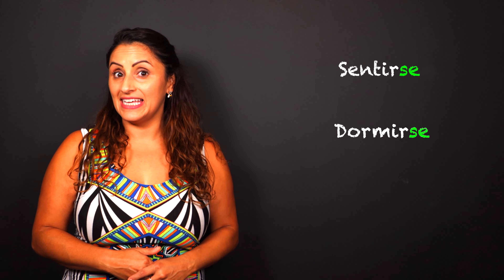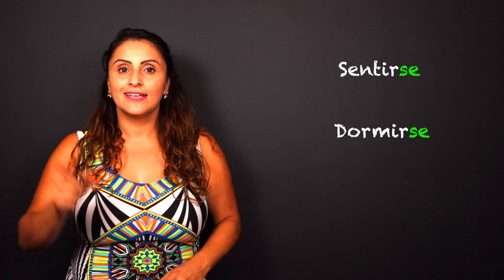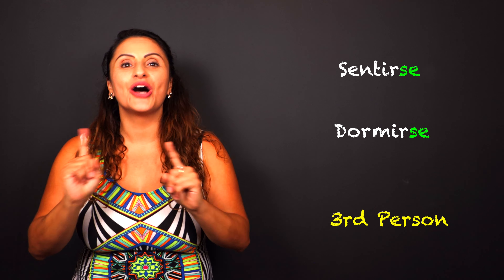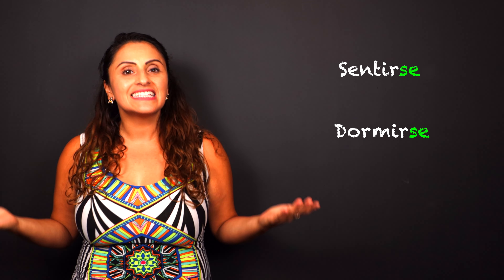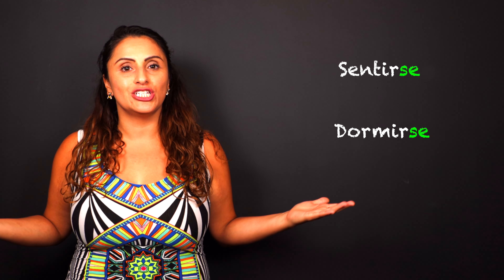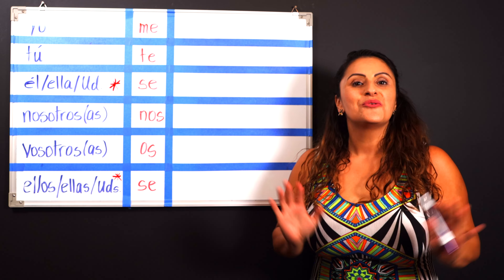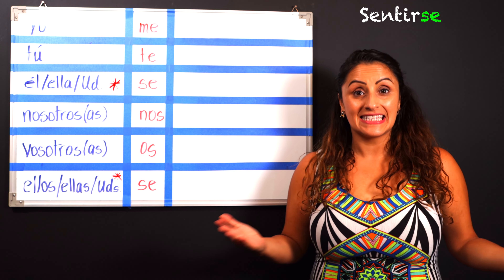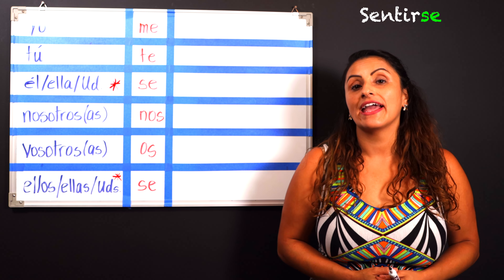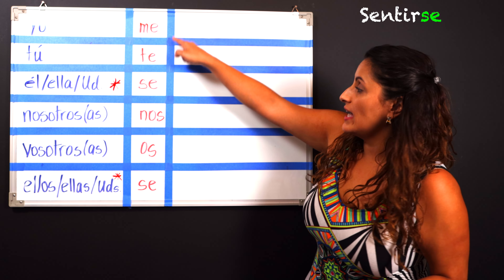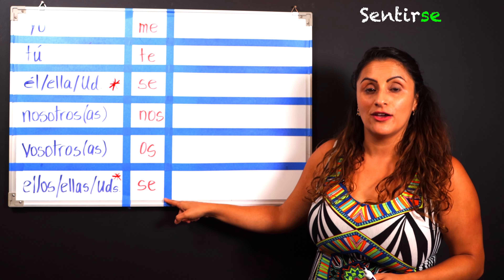So what are stem-changing verbs? Stem-changing verbs are basically verbs that not only change in the ending, but they also have a change in the stem. We learned that we have E to IE, O to UE, and E to I, of course in the present tense. Now that we're talking in the preterite, here's what you need to know: AR and ER verbs do not stem-change in the preterite, but IR verbs do.